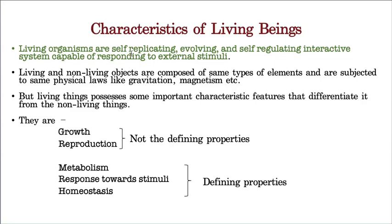A dog has the ability to produce its own offspring, called a puppy. Human beings also have the capacity to produce the young ones of their own kind — we call it a baby, male or female. Organisms should have the capacity for self-replication so they can maintain their species constant.